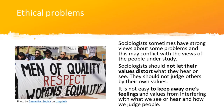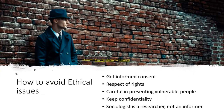Ethical problems may also arise when sociologists sometimes have strong views about some social problems or societal issues. Their views may conflict with the views of the people they study. Sociologists must not let their values interfere with what they hear or see. They should not distort what they see by judging others in terms of the values they hold themselves. It is not often easy for anyone to keep their own feelings and values from interfering with what they see, hear, or how they judge people.